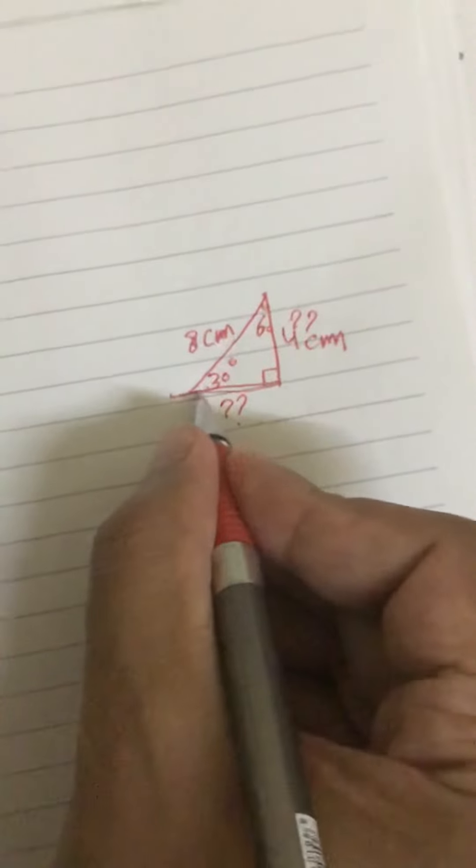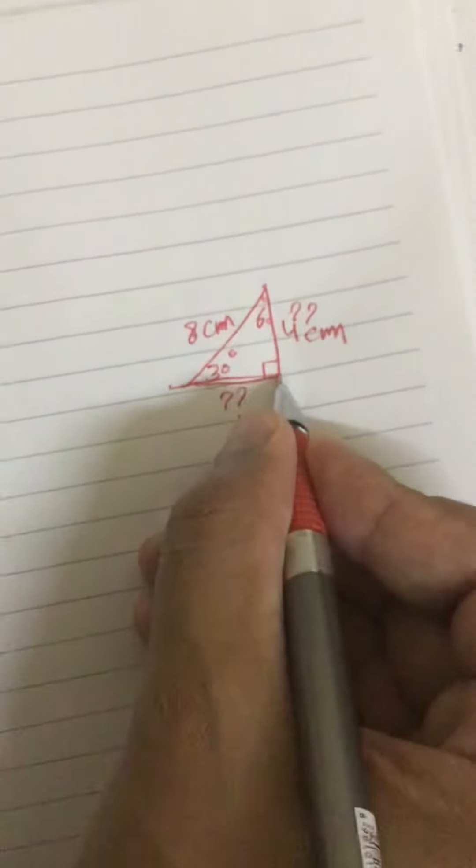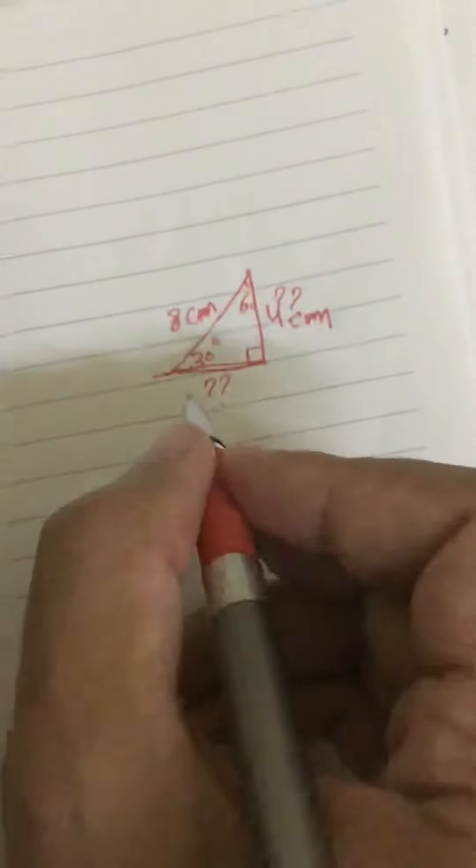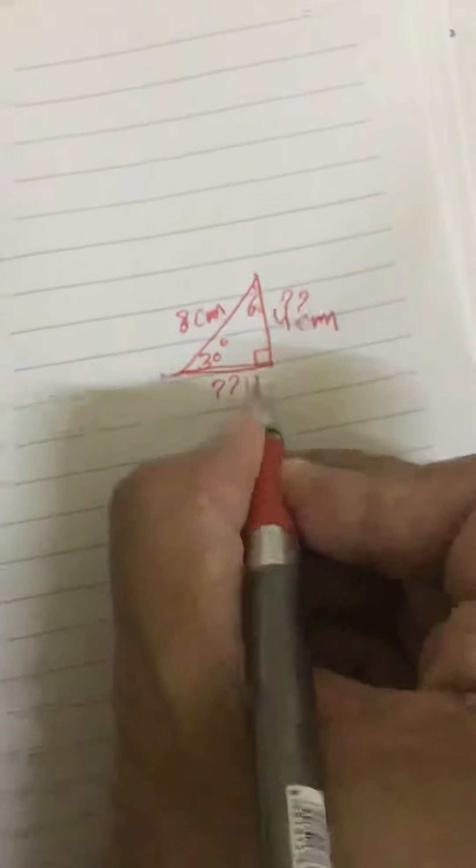What about this side? What is the length of this side? It will be the half of hypotenuse times square root of three. The half will be four times square root of three.